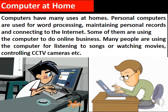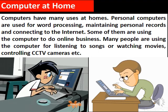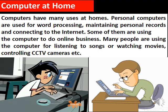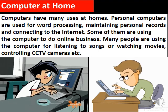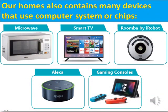Computer at home. Computers have many uses at home. Personal computers are used for word processing, maintaining personal records and connecting to the internet. Some people use the computer to do online business. Many people use computers for listening to songs, watching movies, and controlling CCTV cameras. Our homes also contain many devices that use computer systems or chips, such as: first, microwave; second, smart TV; third, Roomba by iRobot; fourth, Alexa; and fifth, gaming consoles.